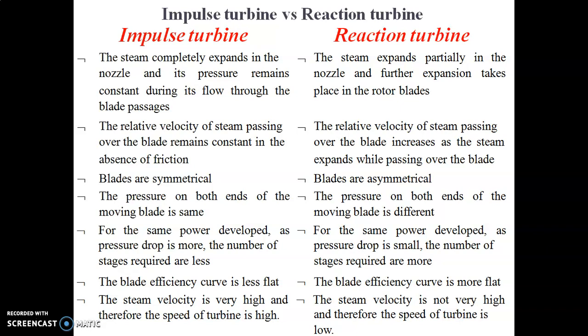In a reaction turbine, the steam expands partially in the nozzle and further expansion takes place in the blades. So at the nozzle the steam expands, and then the rotor blades also expand the steam, meaning the pressure varies throughout.